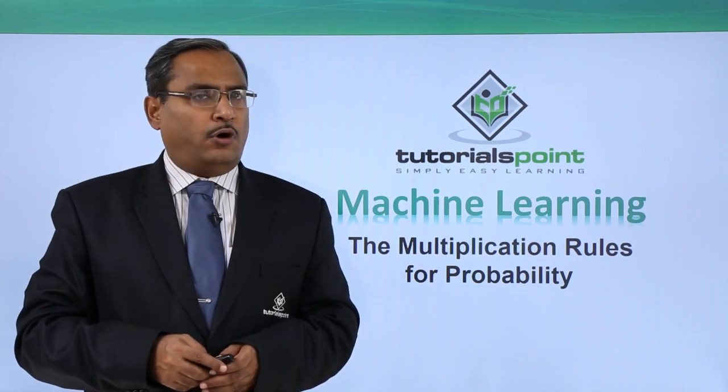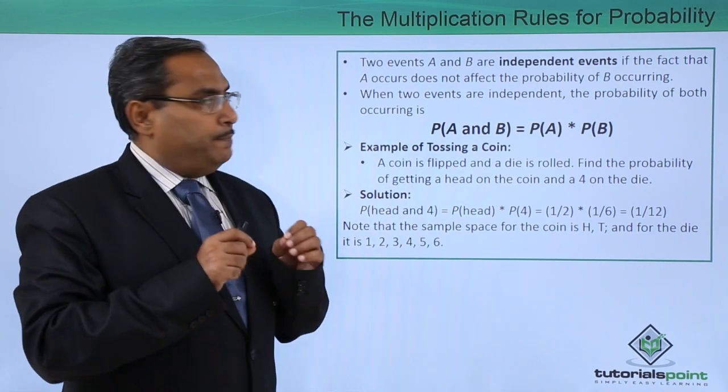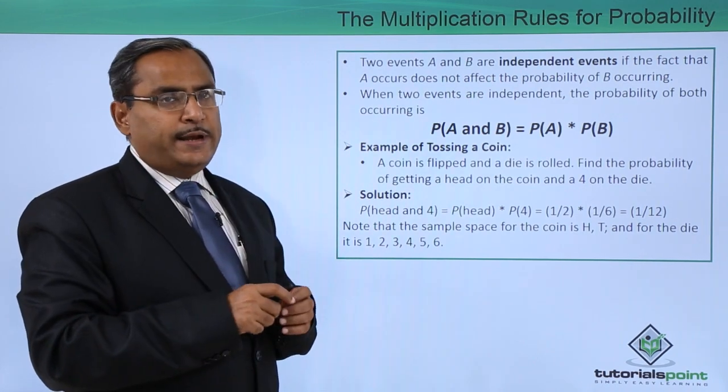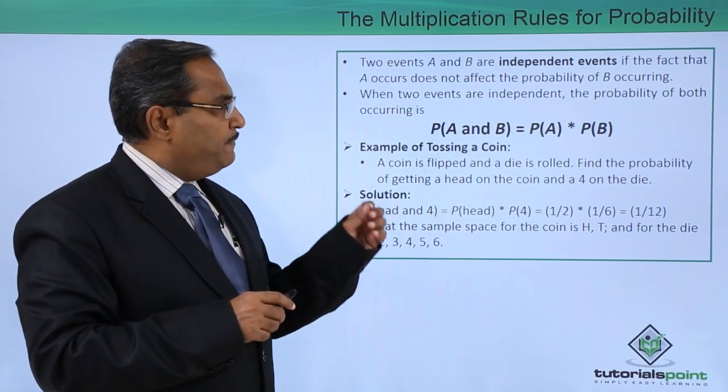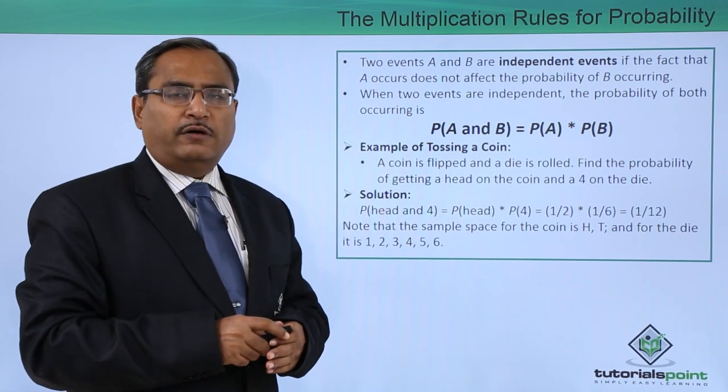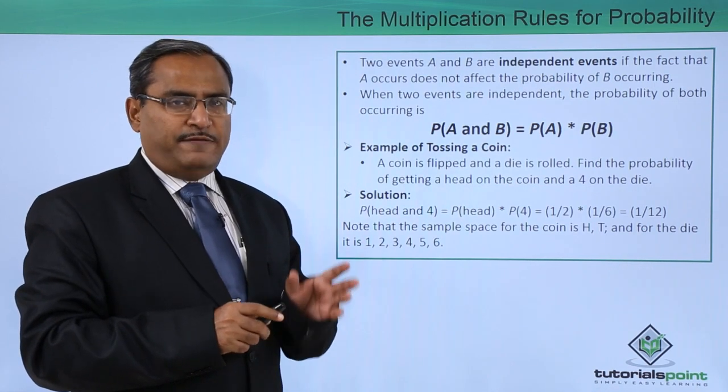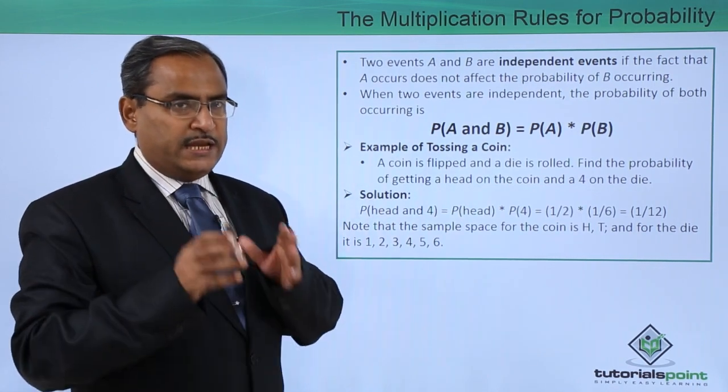The multiplication rules for probability: two events A and B are independent events if the fact that A occurs does not affect the probability of B occurring. That means if A occurs, it will not affect the occurrence of event B.